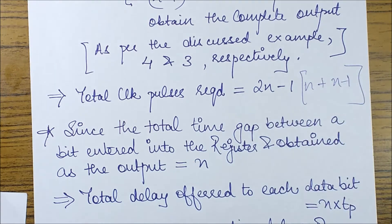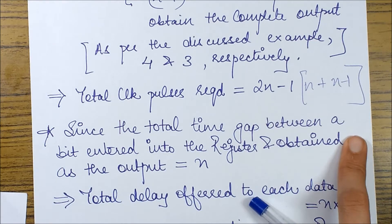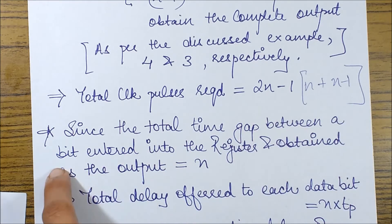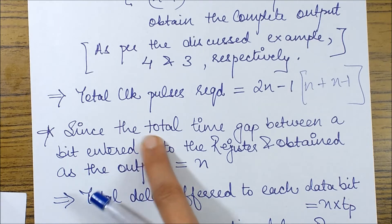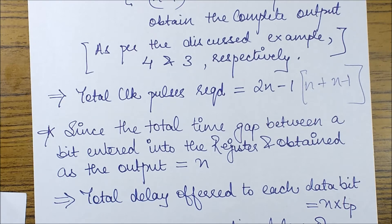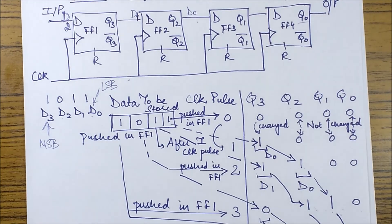Since the total time gap required for a particular bit between when it's imported as input and obtained as output is n, the total delay offered for each data bit will be n times tp, if I consider tp to be the propagation delay of one clock pulse. That's all for this session of serial in serial out shift registers working. Please stay tuned for other informative videos. In case you have any doubt, please post them as comment below. If you like the video, please like it. Thank you and stay tuned.